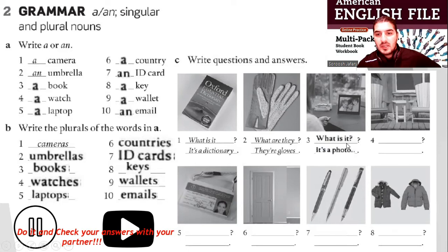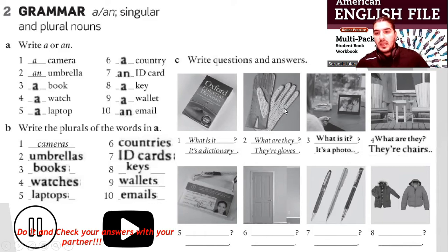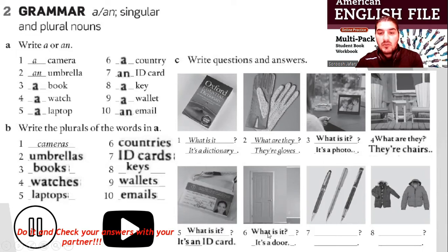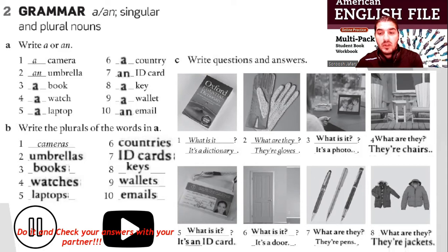What is it? It's a photo. Number four: What are they? They're chairs. Number five: What is it? It's an ID card. Number six: What is it? It's a door. Number seven: What are they? They're pens. Number eight: What are they? They're jackets. Good going!